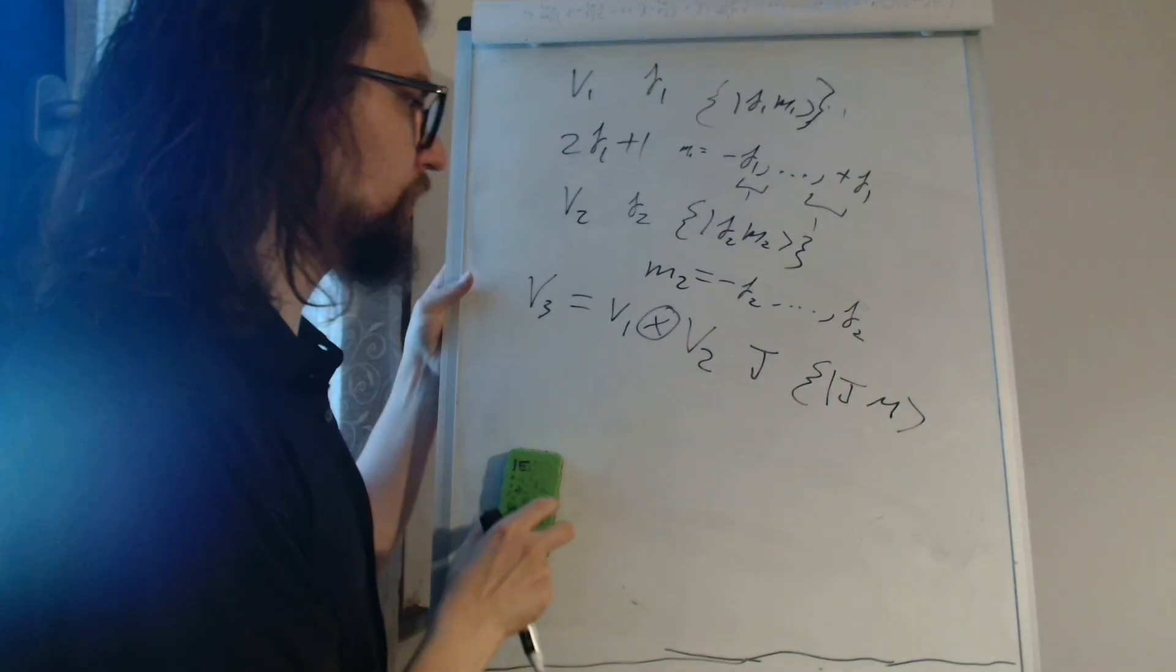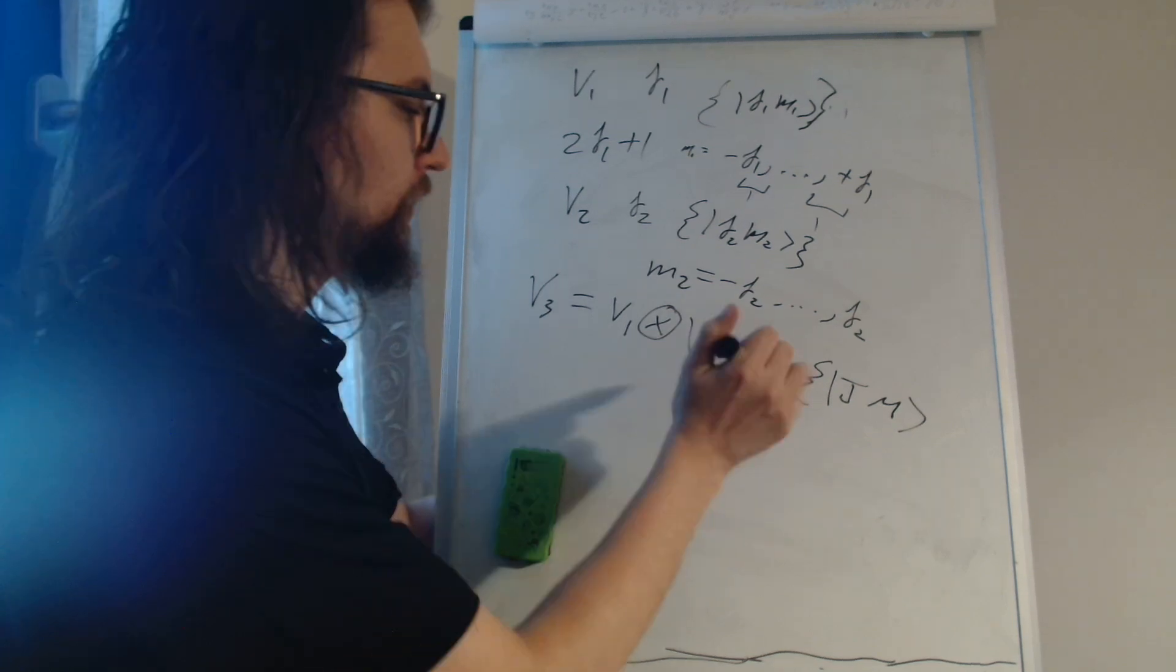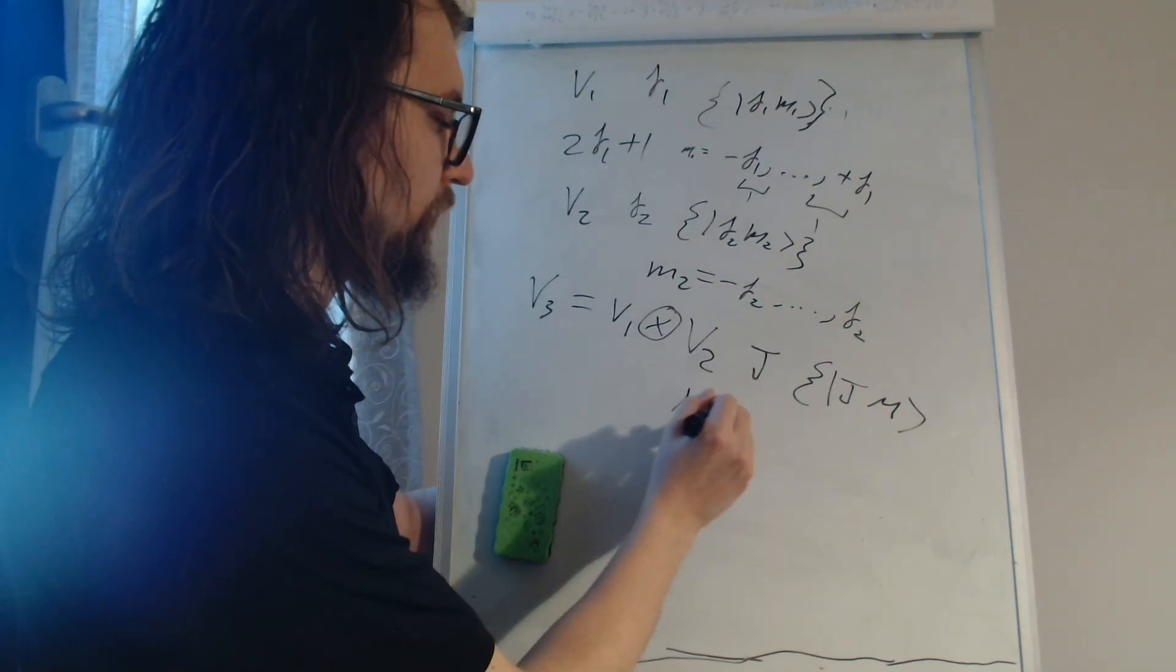M is the angular momentum in a particular direction, and since this is also an angular momentum, M will take values from minus J up to plus J.